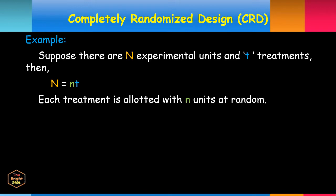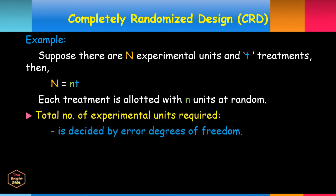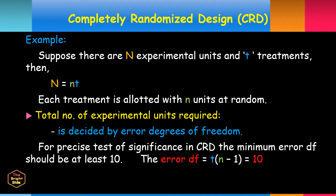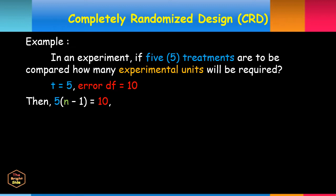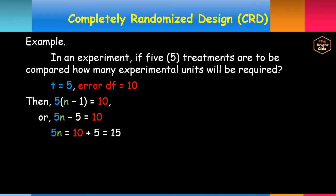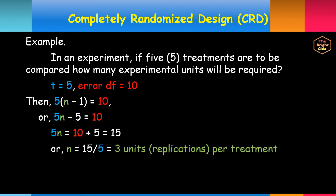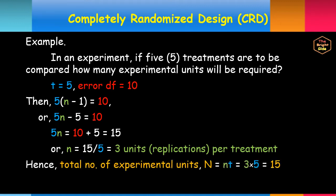Suppose there are N experimental units and T treatments, and each treatment is allotted with n replications at random. The formula is N equals n times T. The total number of experimental units required is decided by error degrees of freedom. For a precise test of significance in CRD, the minimum error DF should be at least 10. For example, with five treatments and error DF equals 10, solving gives 3 units per treatment, so N equals 3 times 5 equals 15.